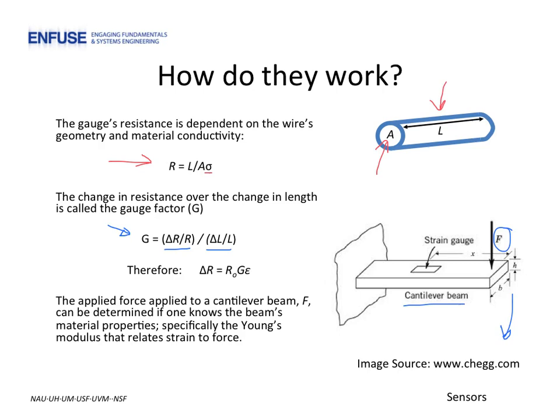For a strain gauge of nominal resistance R0, that is, the resistance when there is no strain, the change in resistance is linearly proportional to strain. So if one can characterize the change in resistance of the gauge, then one can determine the strain introduced in the structure it is bonded to. If one knows the Young's modulus of the material, then the force applied to the beam can also be determined.